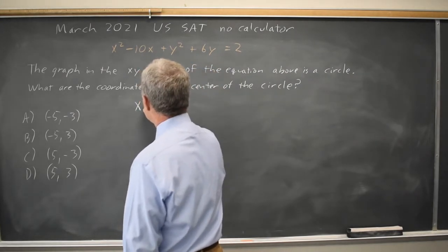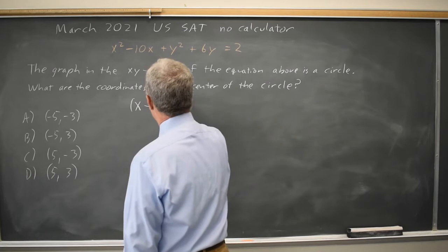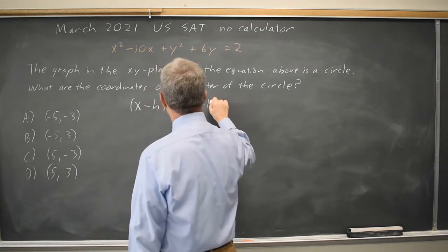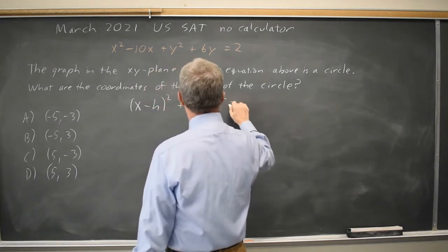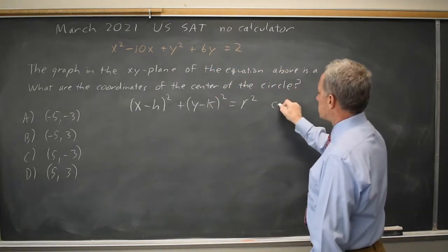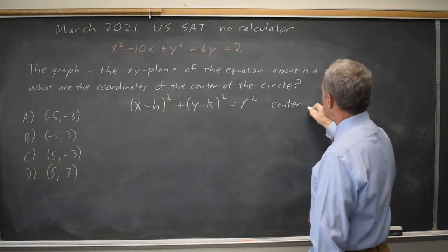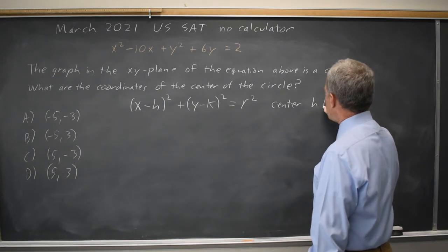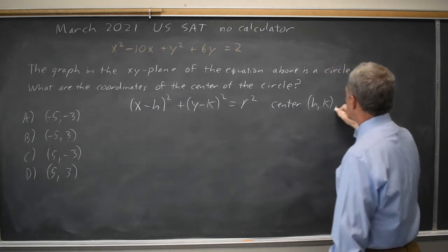So I'm going to recall that the general equation for a circle is (x - h)² + (y - k)² = r², and this has center (h, k) and radius r.